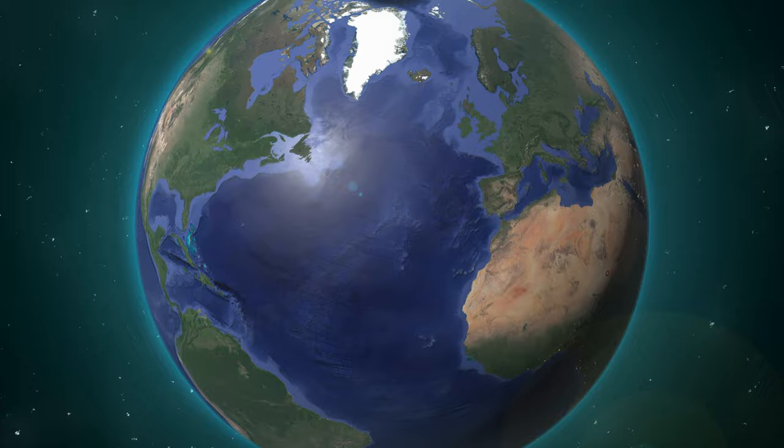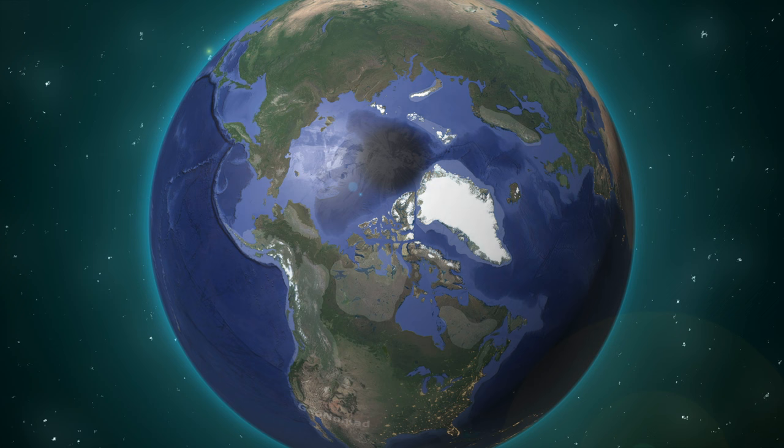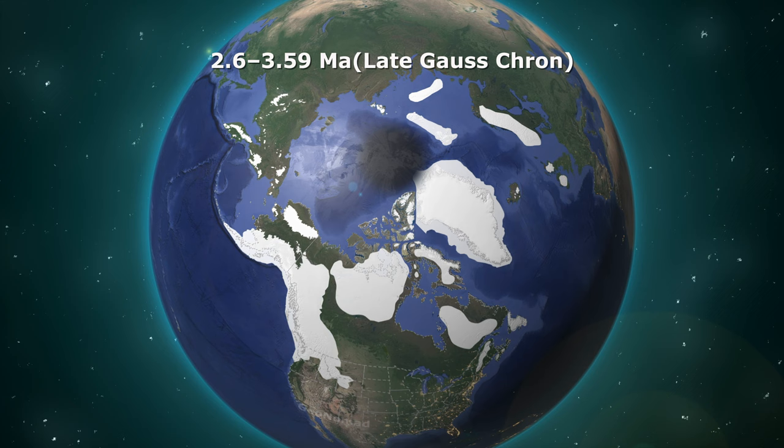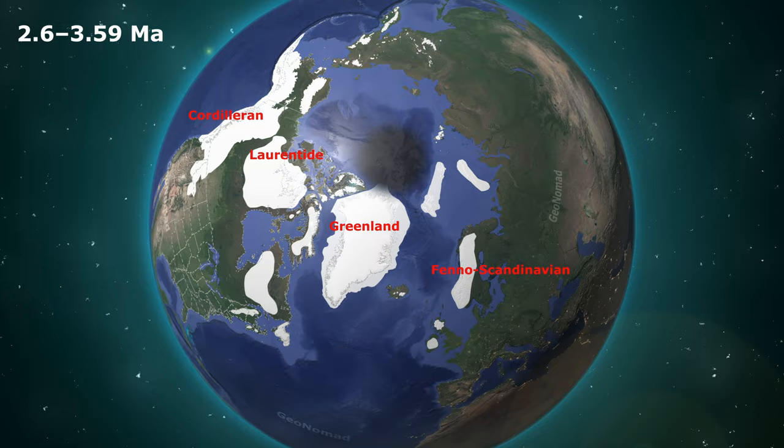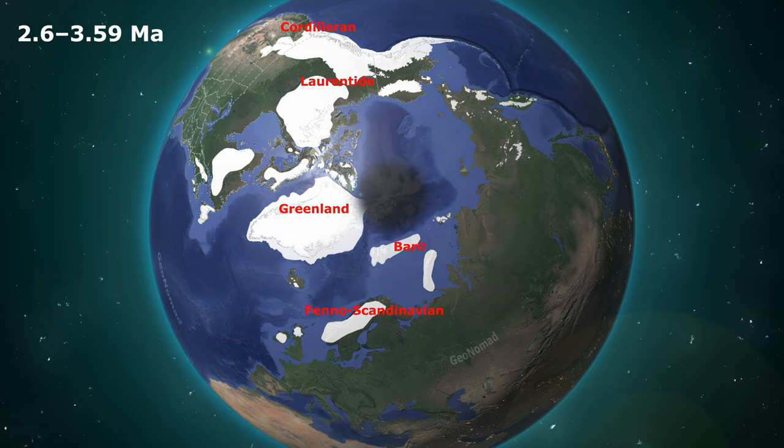From 3.59 million years ago, the Earth gradually cooled and the Northern Hemisphere began to freeze, creating an ice sheet. This period is called the Late Gauss-Kron. At this time, the Earth's magnetic field reversed. Greenland was covered with a broader ice sheet than it is now. Even in North America, the Laurentide ice sheet and Cordilleran ice sheets began to grow. In Europe, parts of Norway and Sweden were covered by ice sheets, as were Ireland and parts of Scotland. Islands in the Barents and Kara Seas were also covered with ice.